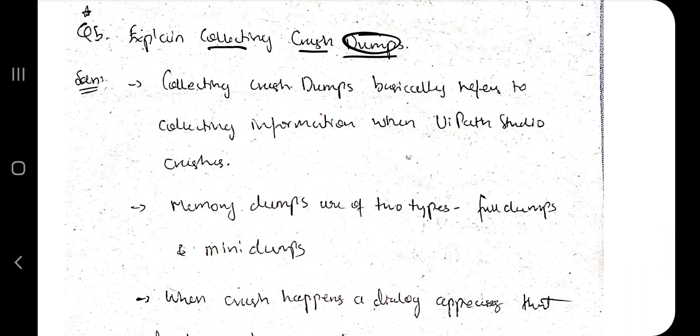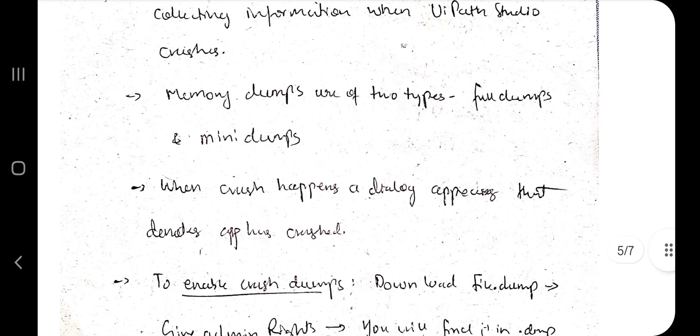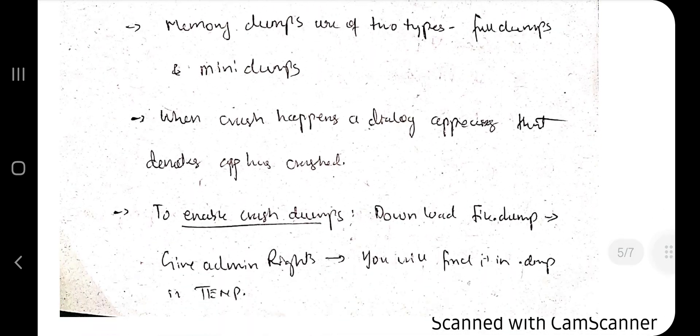Next important question: what is collecting crash dumps? Crash dumps means when the program crashes, some useless things will be produced. That useless thing is actually useful because by using that you can understand why the system has crashed. There are two types of it: full dumps and mini dumps. Full dump will give a detailed information, mini dump will just say what is that dump. When a crash happens, a dialogue will appear.